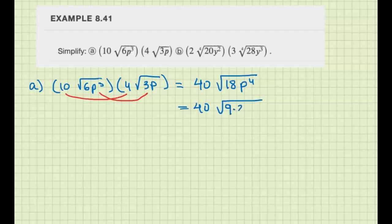We have 40 times √9 is 3, so that multiplies the 40 on the outside. p⁴, 4 divided by 2 is 2, and we get a √2 left over.